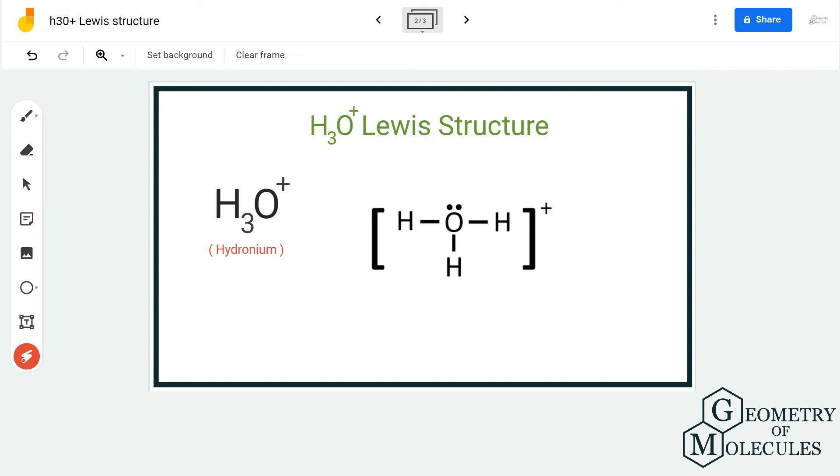But because this is an ion, we are going to put brackets around it and we are also going to mention its charge. So whenever you write the Lewis structure for an ion, make sure to place brackets and mention its charge to show that it's an ion.